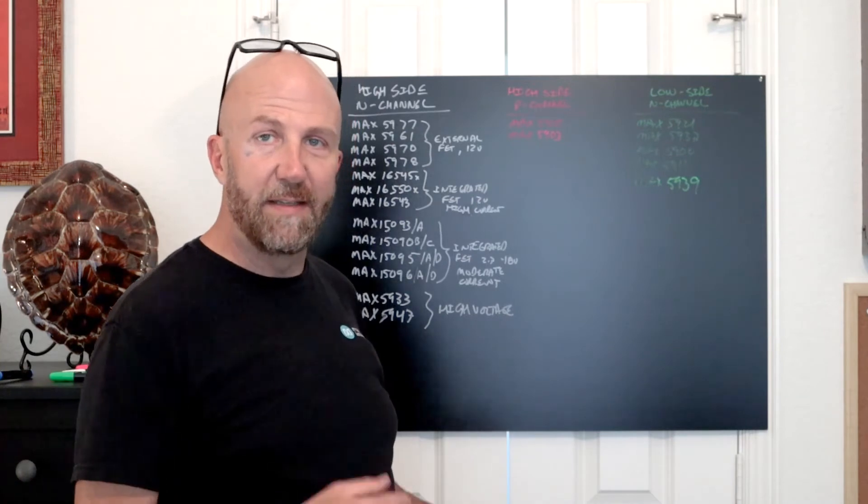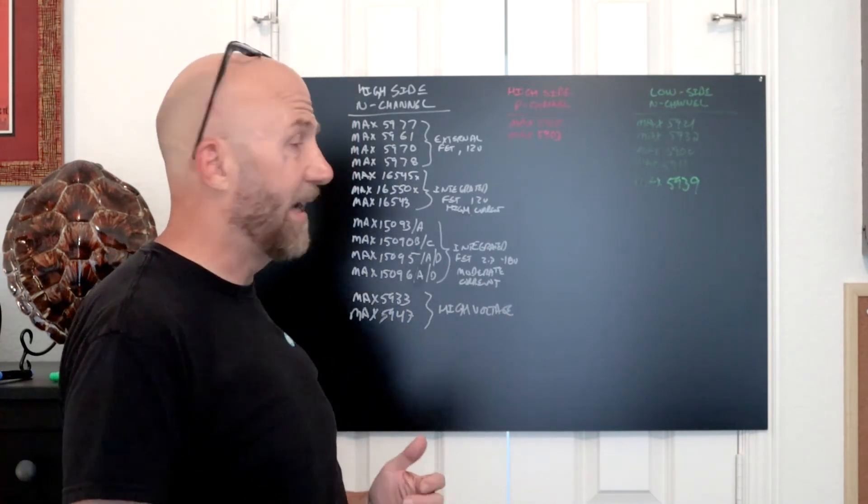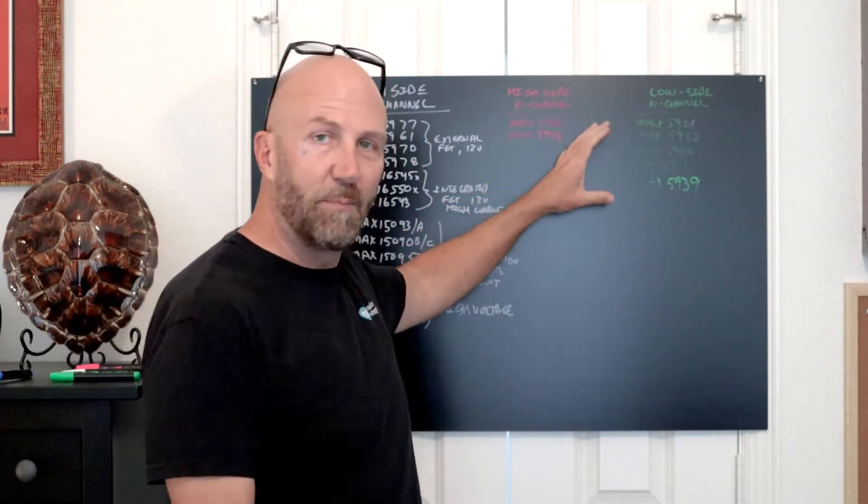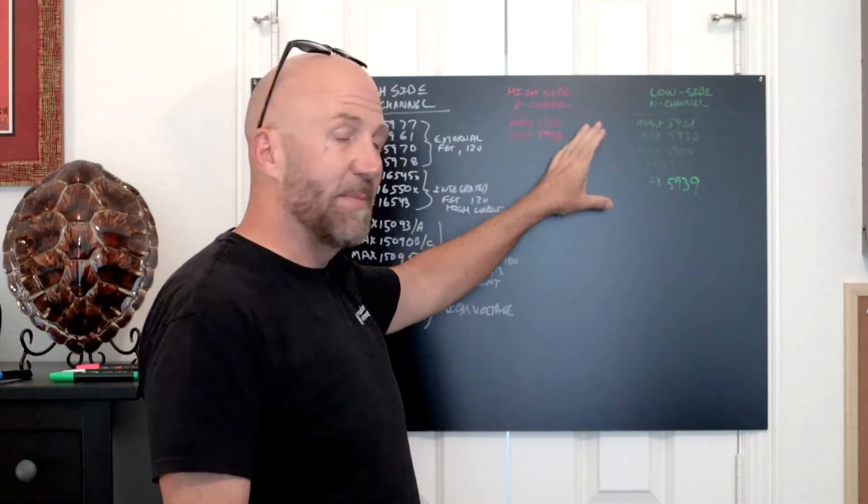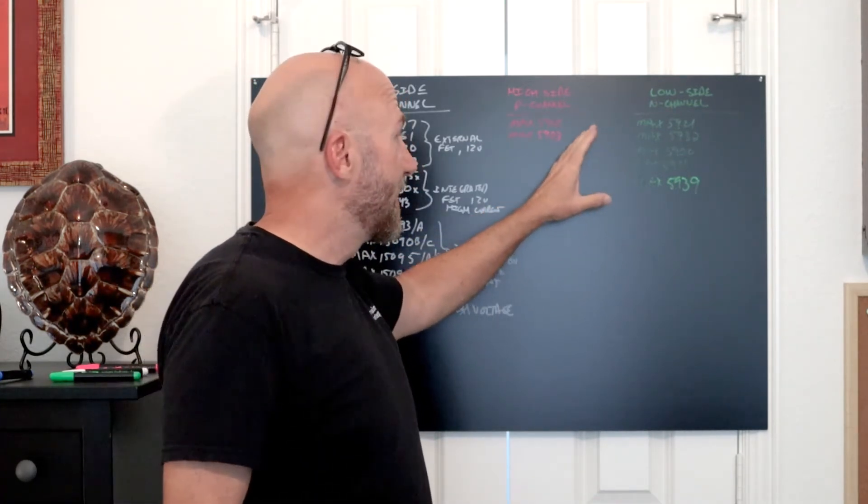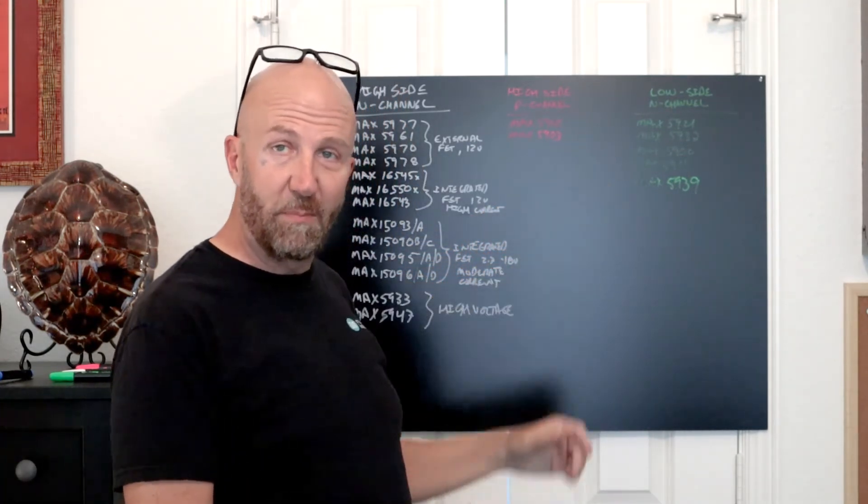Finally, low side N channel. These are parts used for telecom applications, and we're going back about 20 years to when these were a very popular category. Maxim has not developed anything new in this category in a while, but we still have these, and some are pin and function compatible with competing parts.